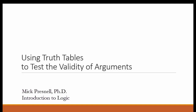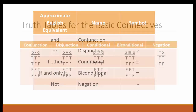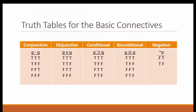This video will show you how to use truth tables to test the validity of simple propositional arguments. Here are the five basic logical connectives in propositional logic: the conjunction, disjunction, conditional, biconditional, and negation. These were introduced in an earlier video. I've also introduced truth tables for the five basic connectives. The more familiar you are with these tables, the easier it will be to move forward in propositional logic.